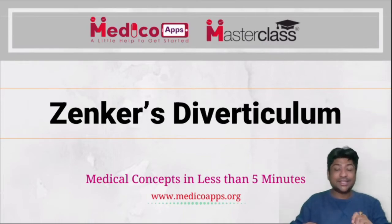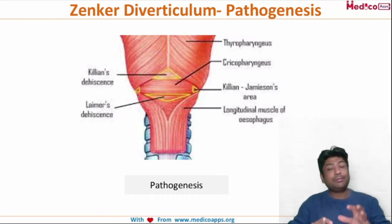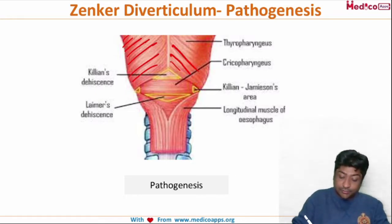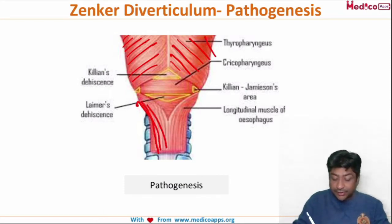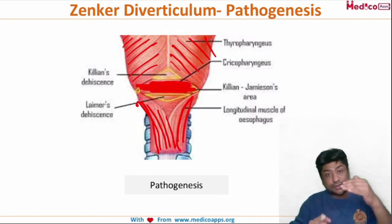The first topic of discussion is Zenker's diverticulum, and to understand its pathogenesis I will have to show you the anatomy also. Looking at the anatomy of the oropharynx and the upper end of the esophagus: this muscle is the thyropharyngeus muscle. This is the upper end of the esophagus with its longitudinal muscle, and this is your cricopharyngeus. These three muscles form the upper end of the esophagus and the oropharynx.